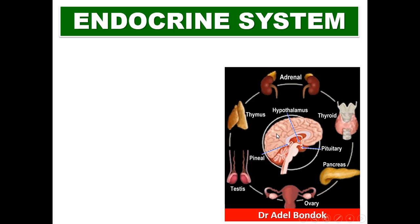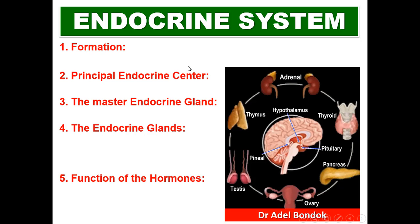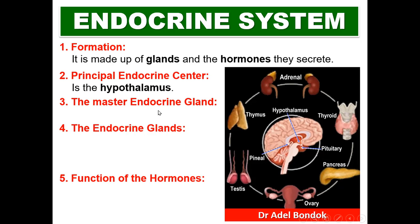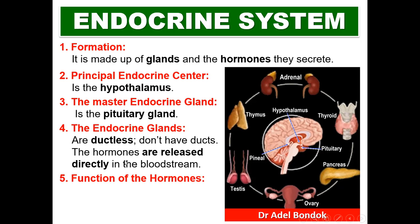What should you know about the endocrine system? The endocrine system is formed of the endocrine glands and the hormones they secrete. The principal endocrine center is the hypothalamus, and the master endocrine gland is the pituitary gland. The endocrine glands are called ductless glands — they don't have ducts, and the hormones are released directly into the bloodstream.